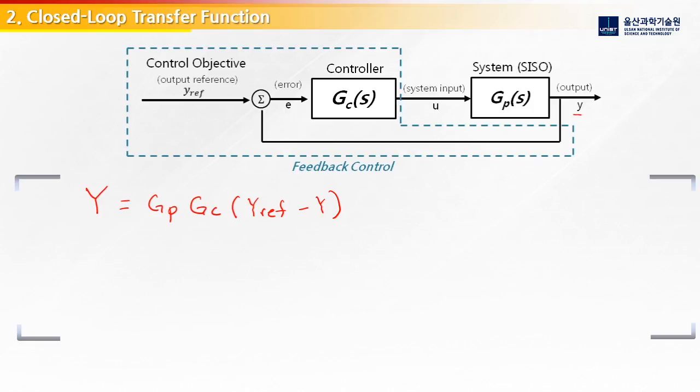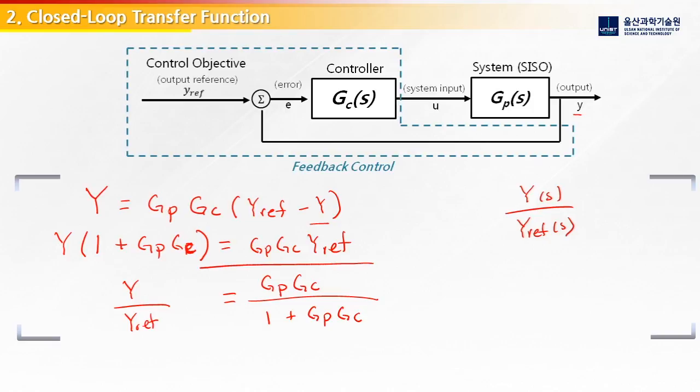Now, let's try to put it in a form of output over the input. We want Y over Yref. So we'll move these different parts around. First, we'll move everything over to the left that has Y. We'll move this term over. We'll get 1 plus Gp Gc equal to Gp Gc Yref. We simply need to move things around here to put it in the correct form. Y over Yref is then going to be equal to Gp Gc over 1 plus Gp Gc. So here is our transfer function for the closed loop feedback system.